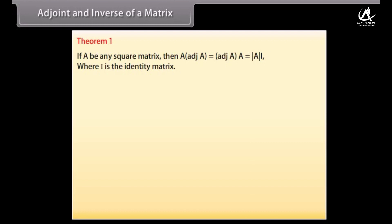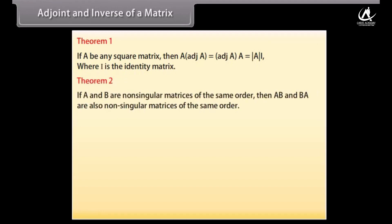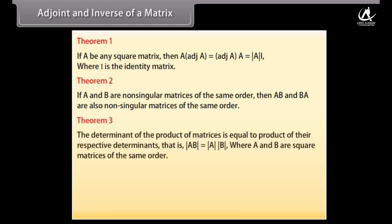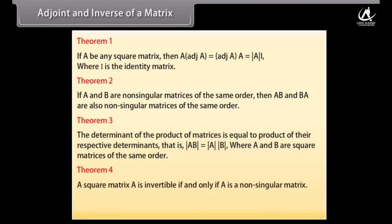Theorems. Theorem 1: If A is any square matrix, then A·adj(A) = adj(A)·A = det(A)·I, where I is the identity matrix. Theorem 2: If A and B are non-singular matrices of the same order, then AB and BA are also non-singular matrices of the same order. Theorem 3: det(AB) = det(A)·det(B) for square matrices A and B of the same order. Theorem 4: A square matrix A is invertible if and only if A is non-singular. Inverse of A = (1/det(A))·adj(A).